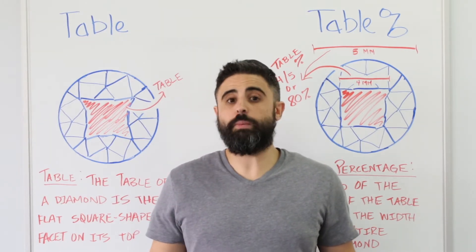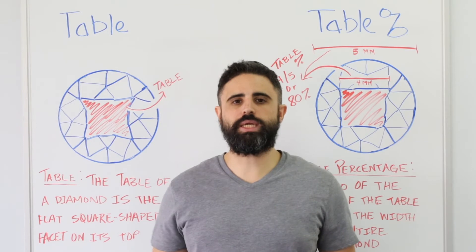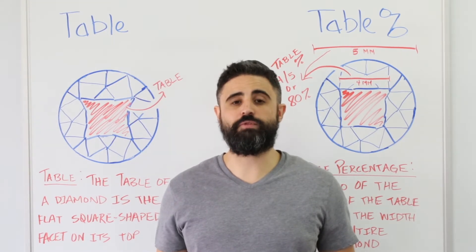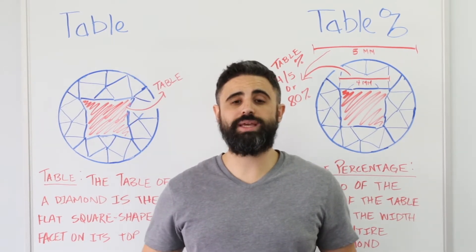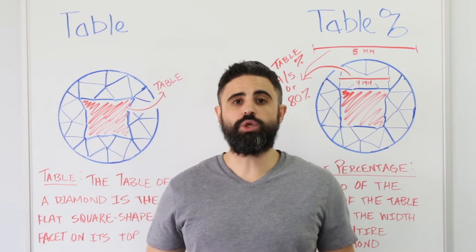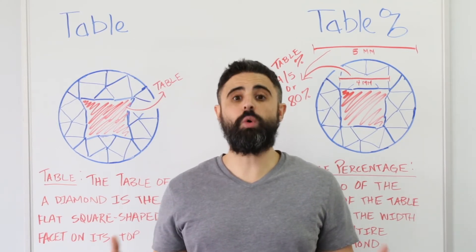So, what is table percentage? The table percentage is the ratio of the width of the table facet to the width of the entire diamond. To calculate table percentage, we would divide a diamond's table width by its total width.